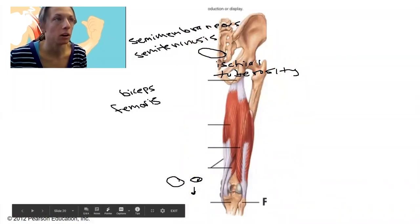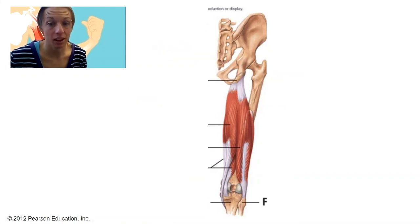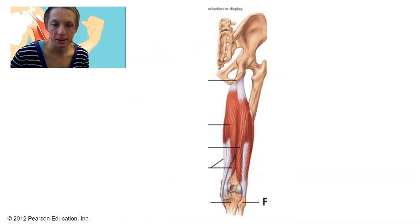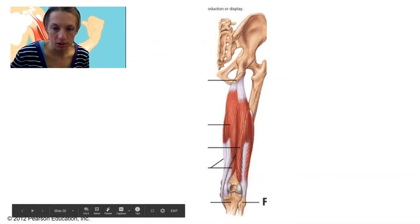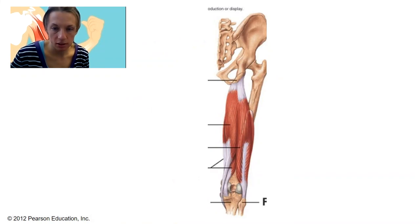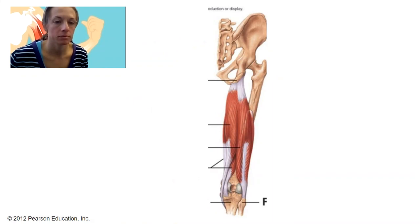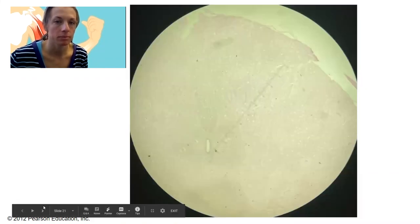Here is another view of the hamstrings — those same three. Biceps femoris, semimembranosus, and semitendinosus.